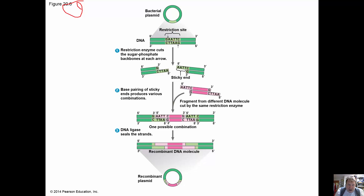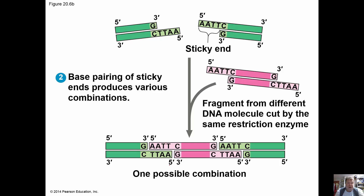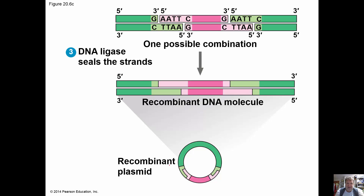As shown in figure 20.6: we take a vector, cut it at a restriction site leaving sticky ends, then take a piece of DNA we've cut that also has sticky ends sticking out. We ligate it into that place and now we have a plasmid that we can put into bacteria — or into a donkey, or whatever — and have it expressed.